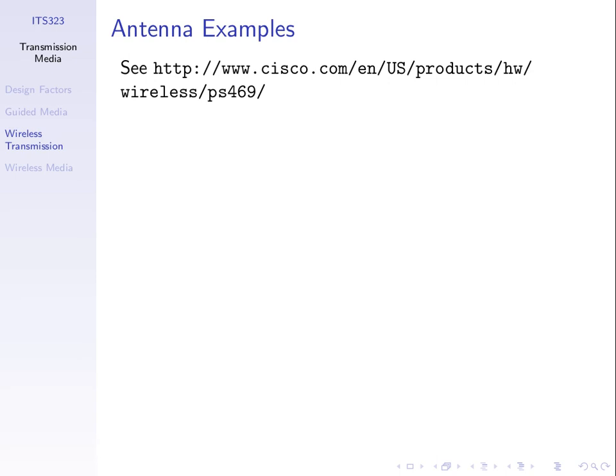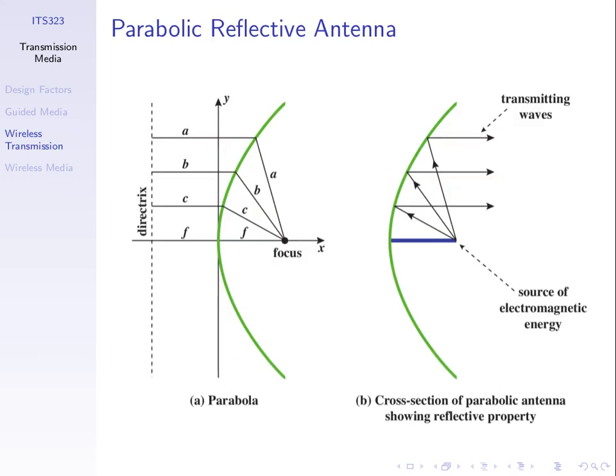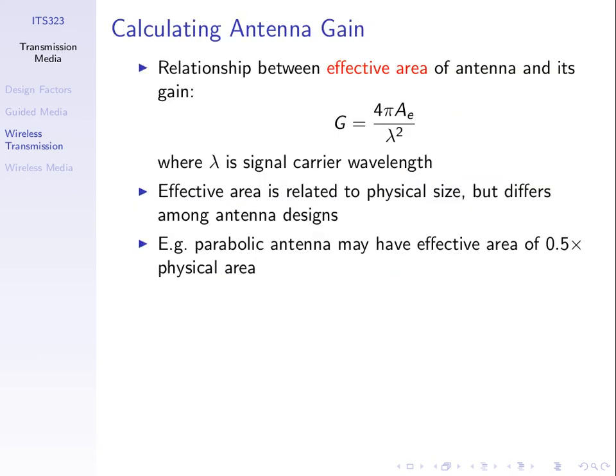Each antenna can be characterized by its gain. Can we calculate the gain without measuring? Yes — here's a general formula. The gain G of an antenna is 4 times pi times the effective area of that antenna, divided by lambda — the wavelength — squared. The gain depends upon the signal that we're sending. The equation for wavelength is lambda equals the speed of light divided by the frequency.